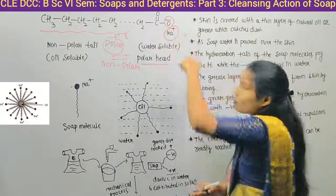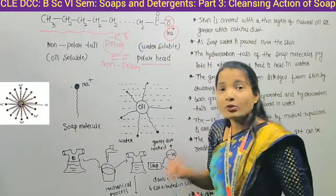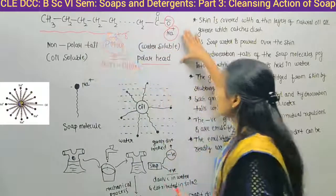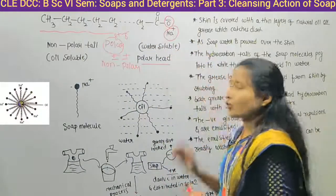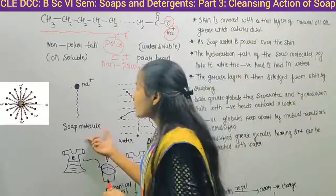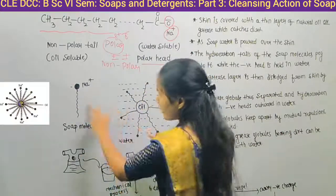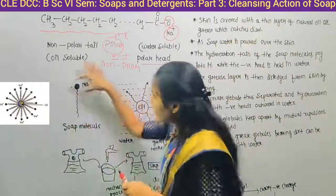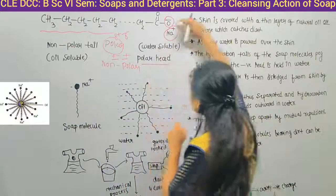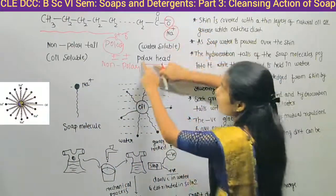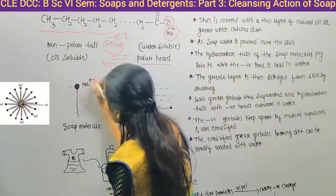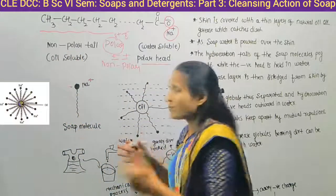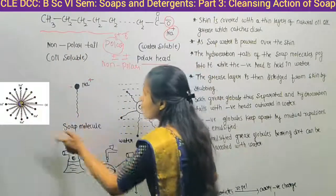So to summarize: the non-polar tail is oil-soluble, and the polar head is water-soluble. The soap molecule looks like this — it has a head and a tail. The head is polar, with negative and positive charges, and the tail is non-polar, meaning there is no charge separation. This is the soap molecule.